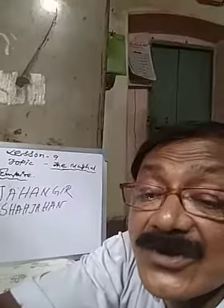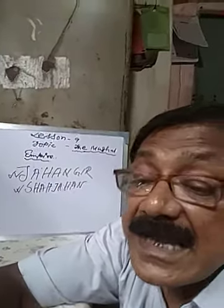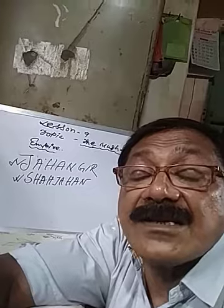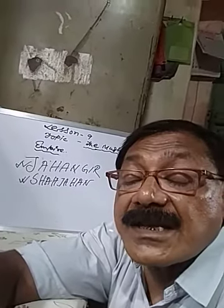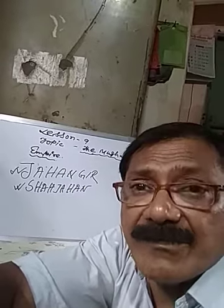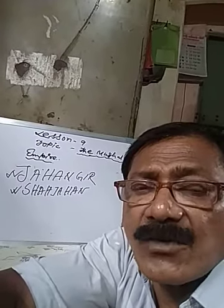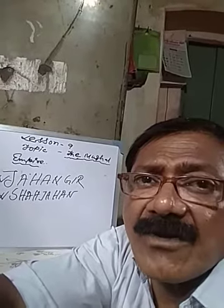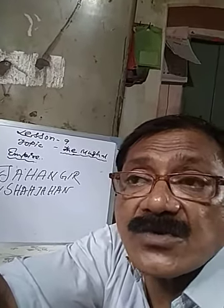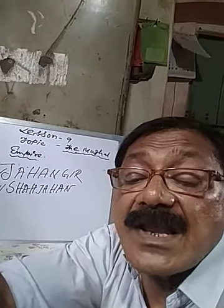The emperor had hung a bell from his royal palace, and stated that any citizen who felt he was being unfairly treated may contact him by ringing the bell and would come to meet Jahangir for proper judgment. This system introduced by Jahangir is known as Jahangir's Bell of Justice.